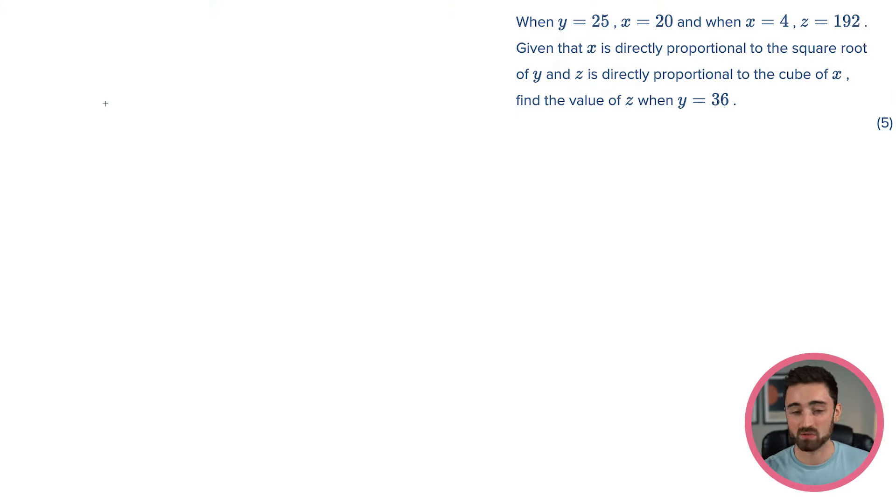So it says, when y is 25, x is 20. When x is 4, z equals 192. Given that x is directly proportional to the square root of y, and z is directly proportional to the cube of x, find the value of z when y equals 36.